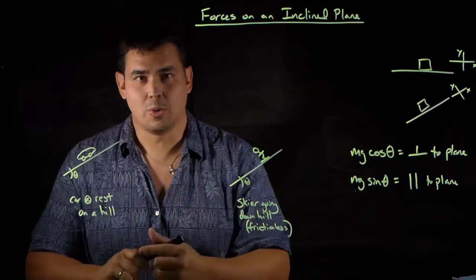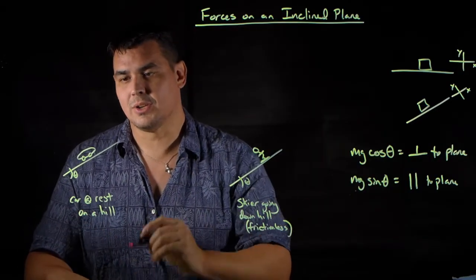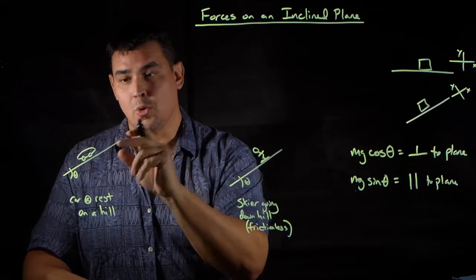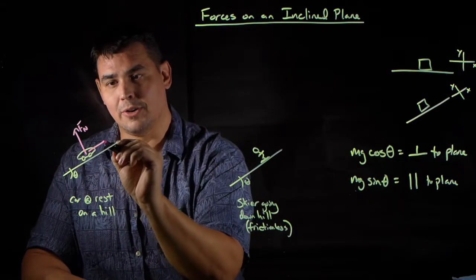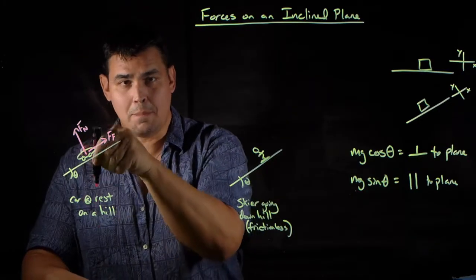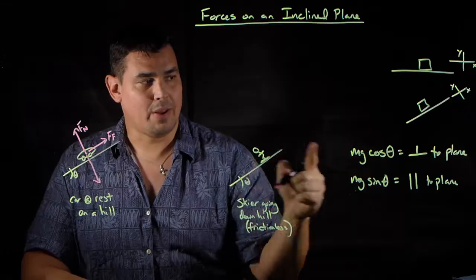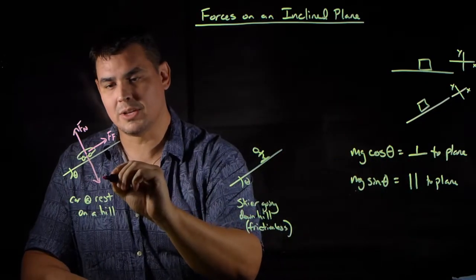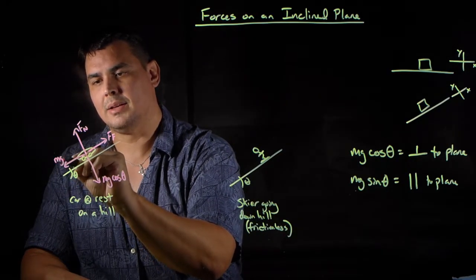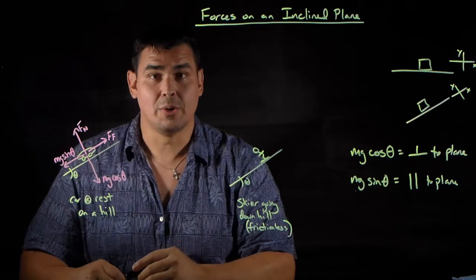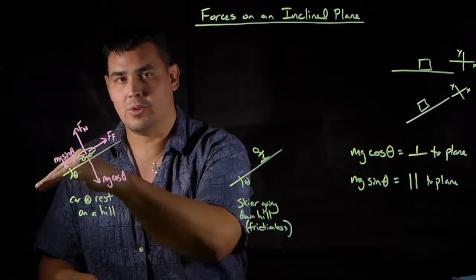Here are two quick examples. First, a car at rest on a hill. The normal force is perpendicular to the ramp, and friction points up the ramp to keep it from rolling down. Then I break gravity into its two components: mg cosine theta pointing into the ramp, and mg sine theta pulling it down the ramp. If you know the angle and the weight of the car, you can write equations for each direction and solve for the normal force and frictional force.